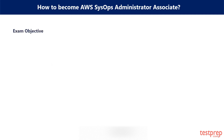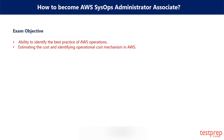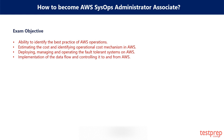Exam Objectives. Candidates giving this exam are assessed using the following structure: first, ability to identify the best practices of AWS operations; second, estimating the cost and identifying operational cost mechanisms in AWS; third, deploying, managing, and operating fault-tolerant systems on AWS; fourth, implementation of data flow and controlling it to and from AWS.